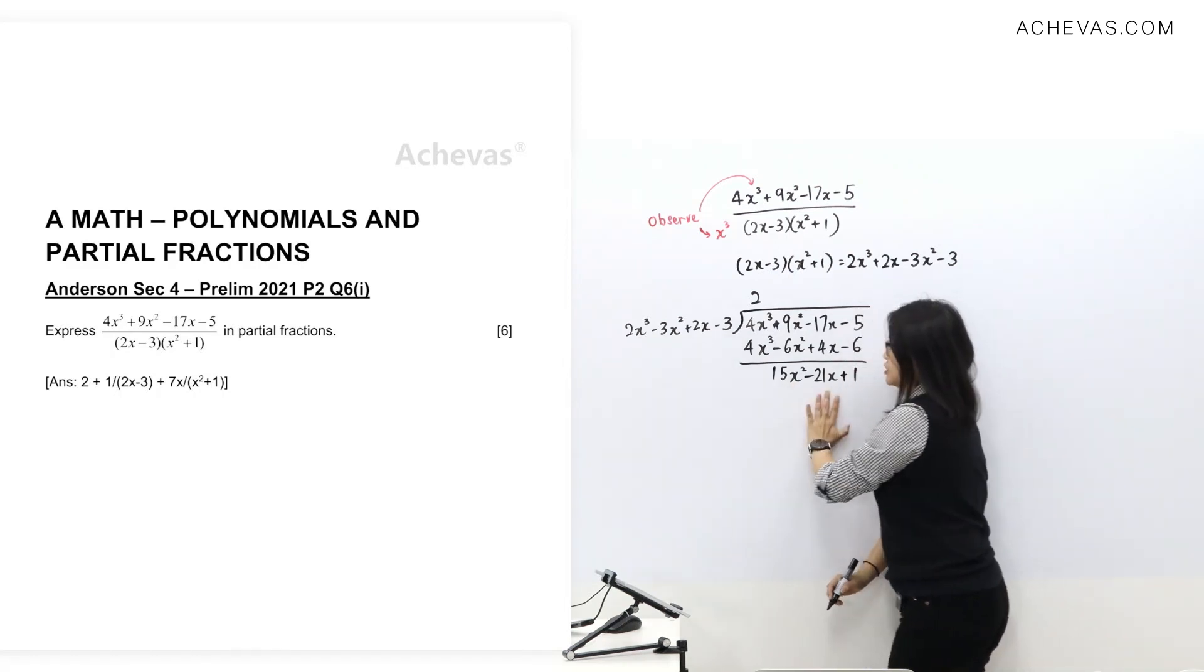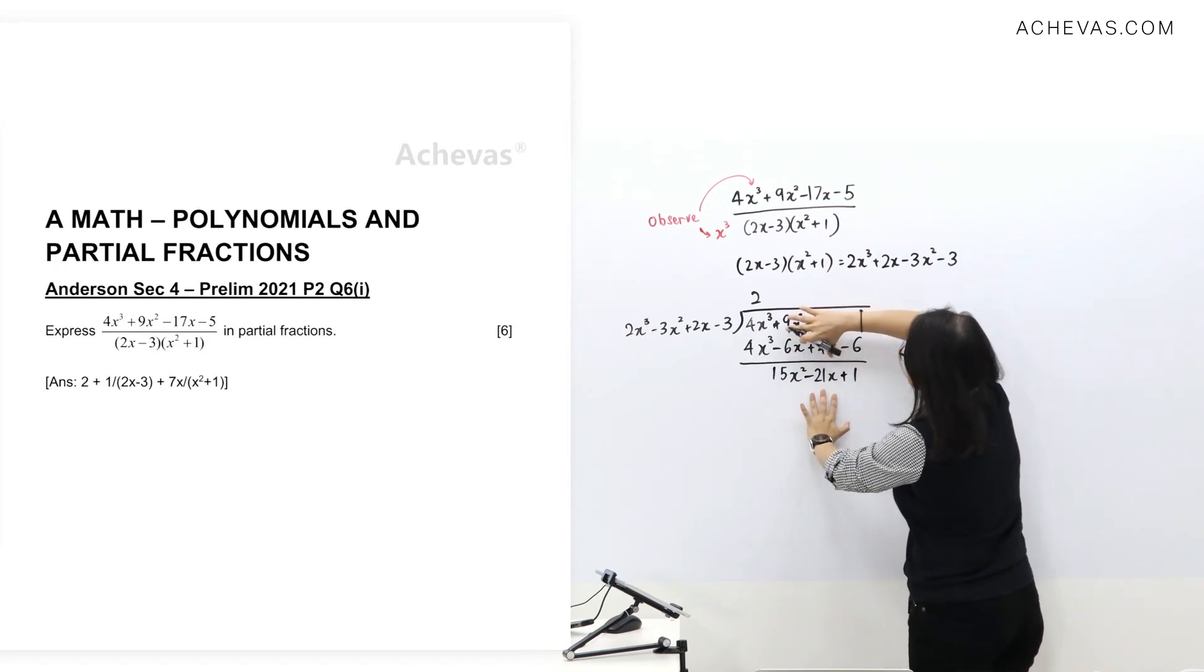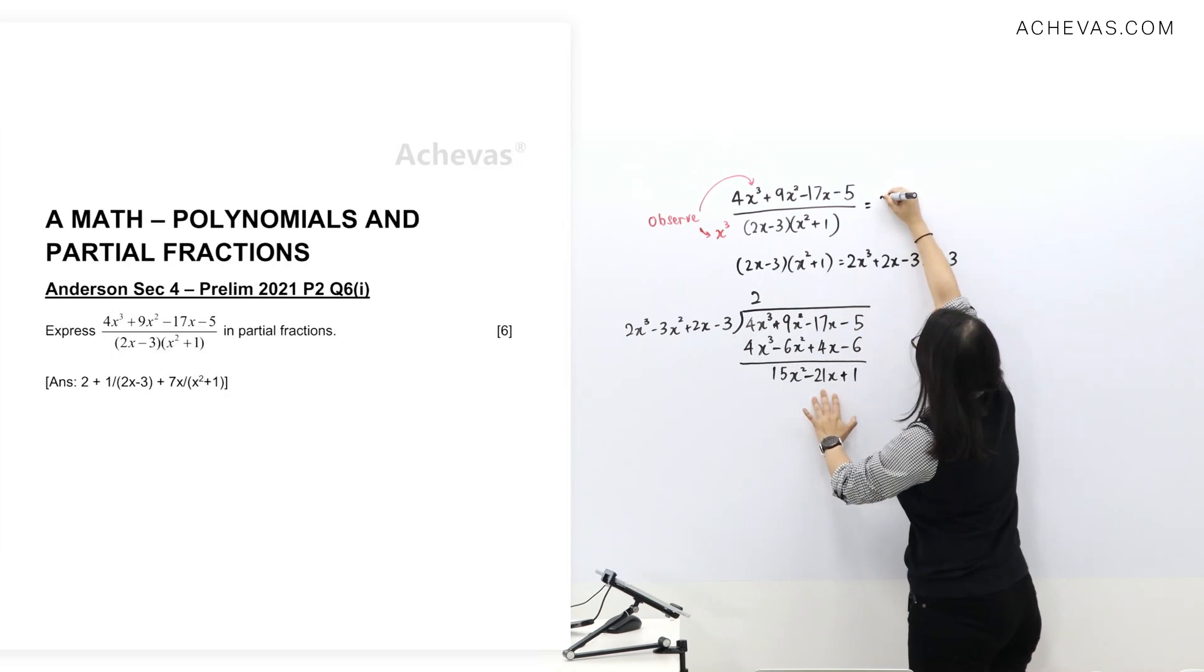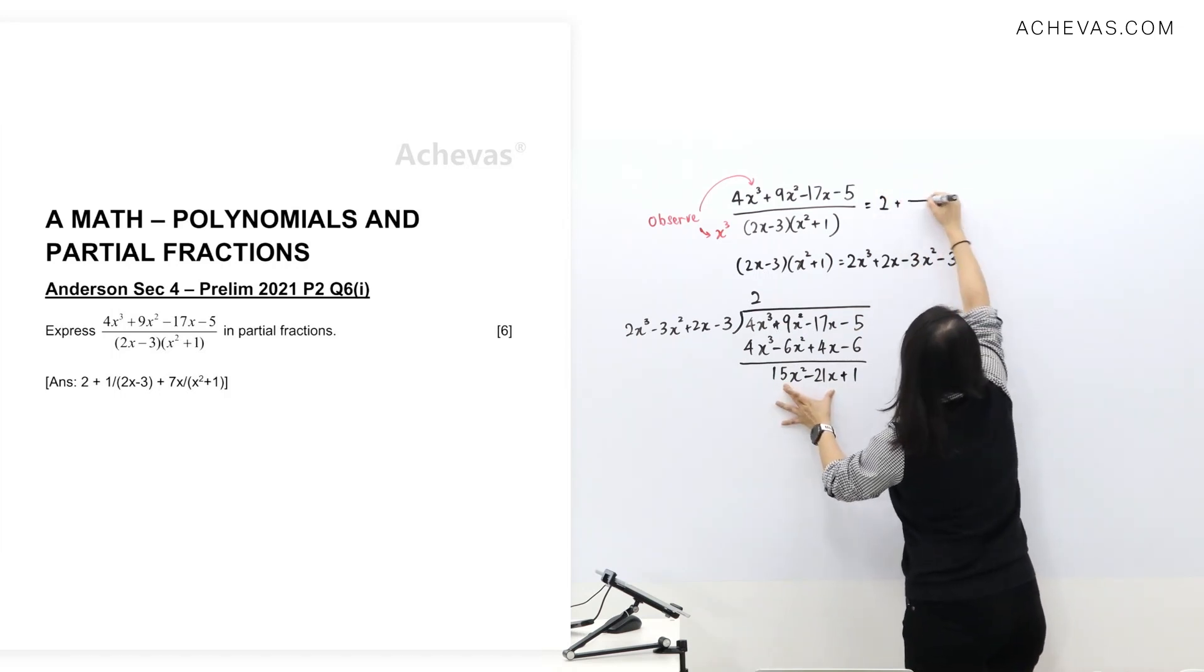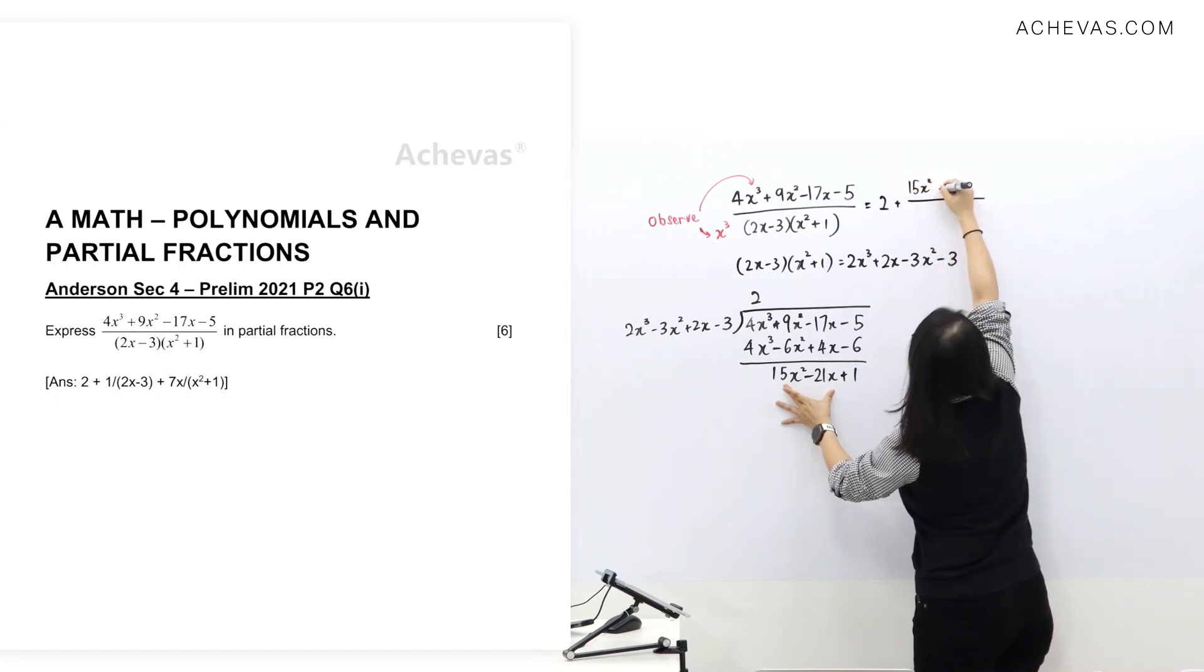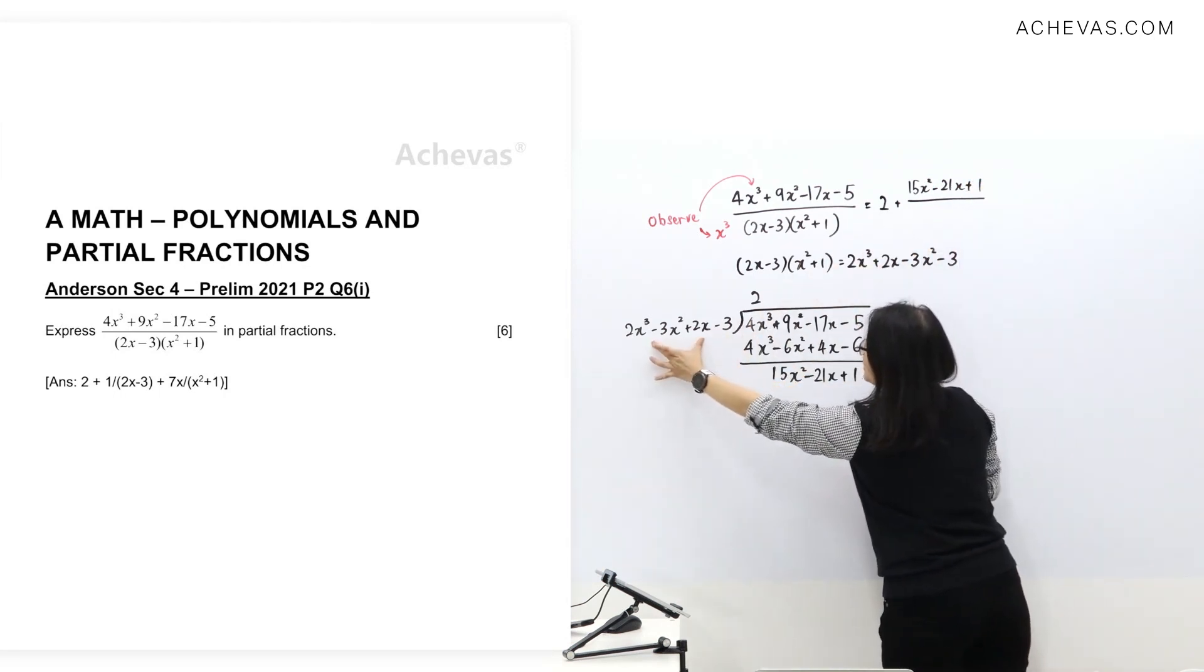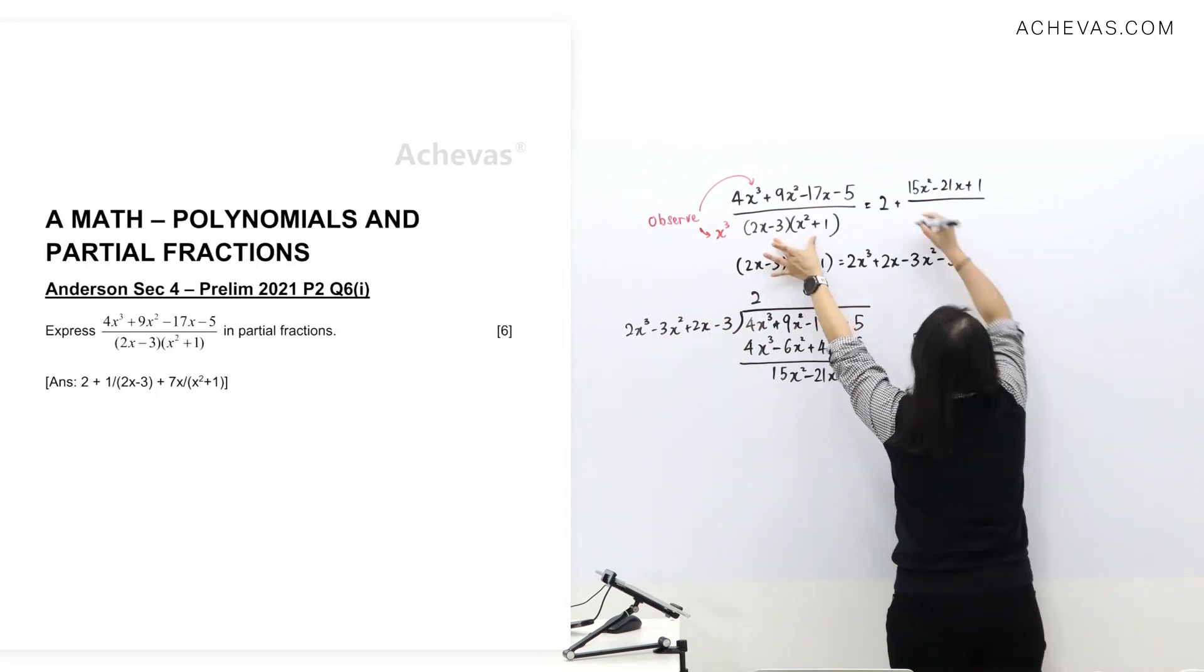We get a remainder here. Let's check the term in the remainder. The highest term is x², which is lower than this one, so we stop here. Let's put this answer in: quotient 2 goes first, add the remainder over the denominator. This part is the factorized form.